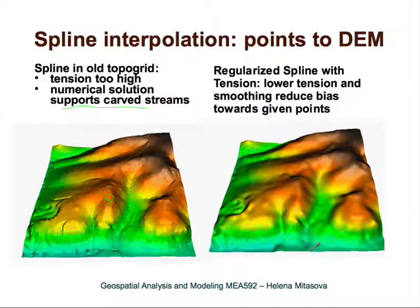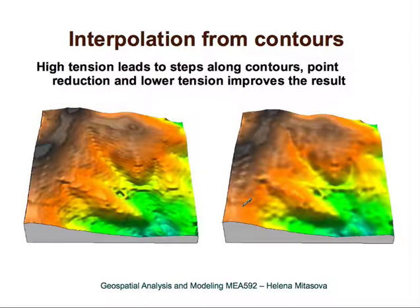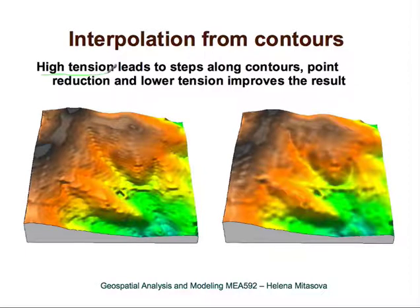Here is the same surface interpolated from the same data using lower tension and slightly higher smoothing. You don't really see any bias towards the data set — no little peaks and pits. Here is an example of the influence of tension on a surface when interpolating from contours. If you use high tension and your data are along contours, you will get artificial steps along the given contours. By tuning tension and smoothing, these artificial steps can be made to disappear.